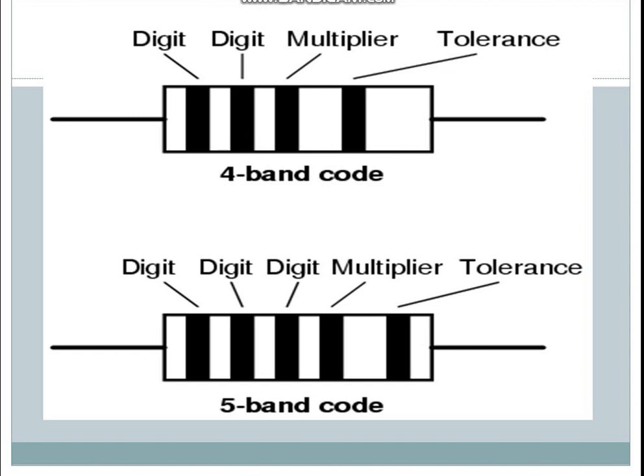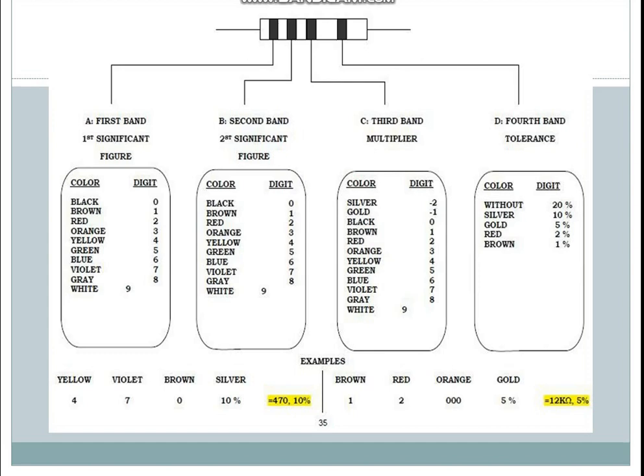In the four-band code there are two digit bands, a multiplier, and a tolerance. In the five-band code there are three digit bands, a multiplier, and a tolerance. This is the resistor color coding chart. A is the first band — a significant figure — and B is the second band, also one significant figure. The third band is the multiplier and the fourth band is the tolerance.